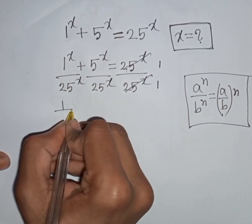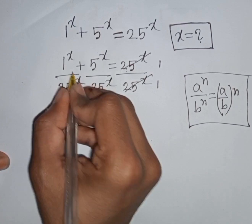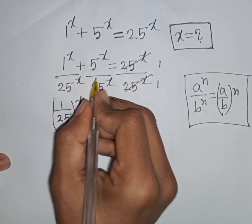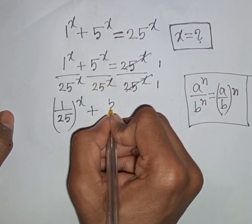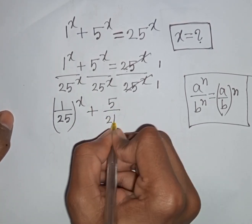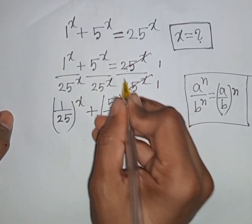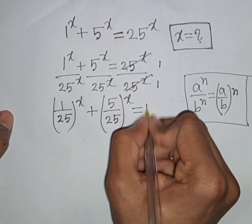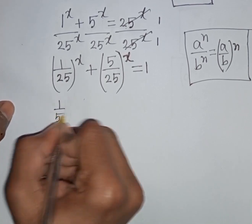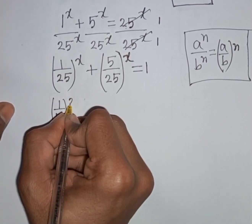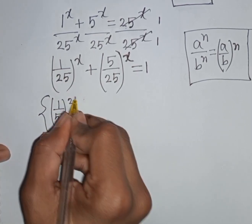I can write (1/5) power x plus (5/25) power x is equal to 1. Now 1/25 can be written as (1/5) squared, because 5 squared is the same as 25. Then the first bracket can be written in terms of the second bracket.